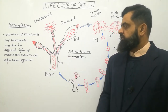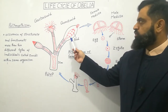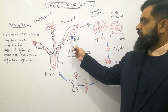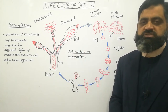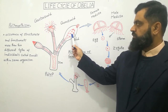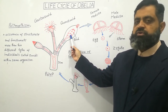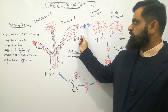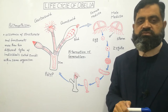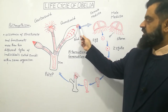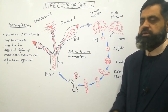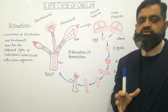During reproduction, the Gonozoid, which is a zooid present in this colony, reproduces asexually through a process known as budding. During the budding process, small outgrowths called buds are produced on the surface of the Gonozoid, which are released into the water through a small pore present on the surface of the Gonozoid. These buds, when released into the water, develop flagella-like structures and become another body form known as Medusa.